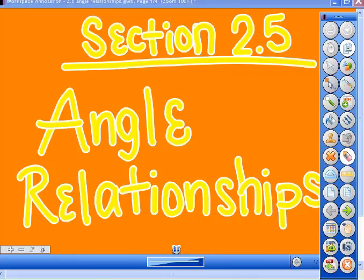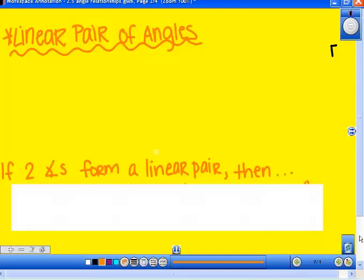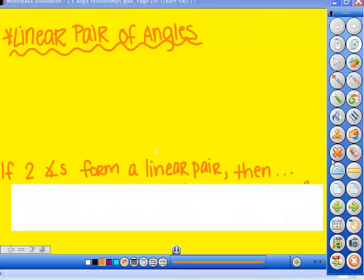We're going to be talking about angle relationships. The first one we're going to discuss is a linear pair of angles. Now when you have a linear pair of angles, you should recognize that term from chapter one and know that a linear pair of angles are angles that form a straight line together. It's right there in the term linear, line.